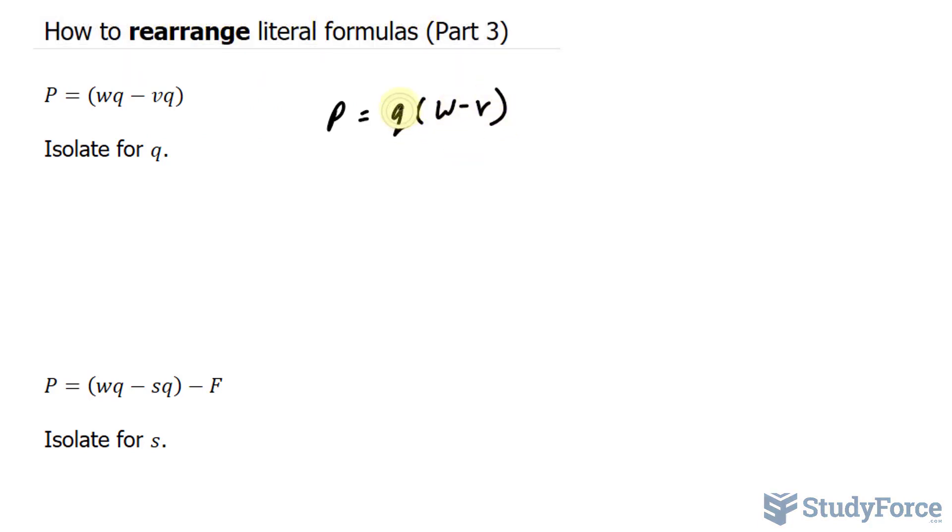Now we have two factors, Q and what's inside the parentheses. Dividing both sides by W minus V, watch what happens. This factor and this factor will cancel out, leaving us with Q is equal to P over W minus V.